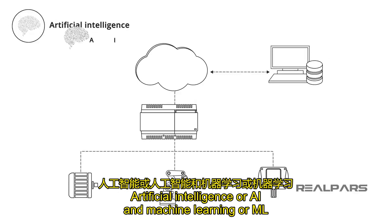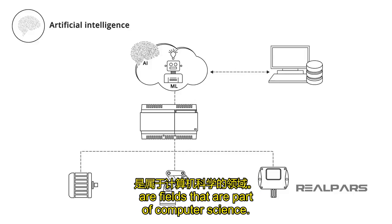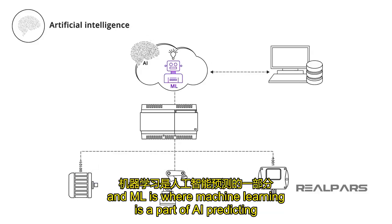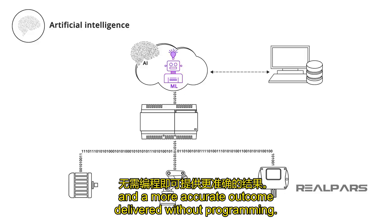Artificial intelligence, or AI, and machine learning, or ML, are fields that are part of computer science. AI is where intelligent machines are developed and respond like humans, and ML is where machine learning is part of AI — predicting a more accurate outcome delivered without programming.